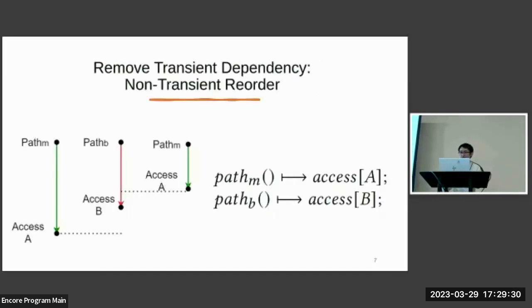So now we introduce the non-transient reorder-based racing gadget, which overcomes the limitation of the previous gadget. If path M finishes first, A will be accessed before B. If the baseline path finishes first, then B will be accessed before A. We map A and B into the same L1 cache set and modify the pseudo-LRU gadget introducing Google's spectre-proof concept tag into a magnifier gadget that takes the access sequence as an input.